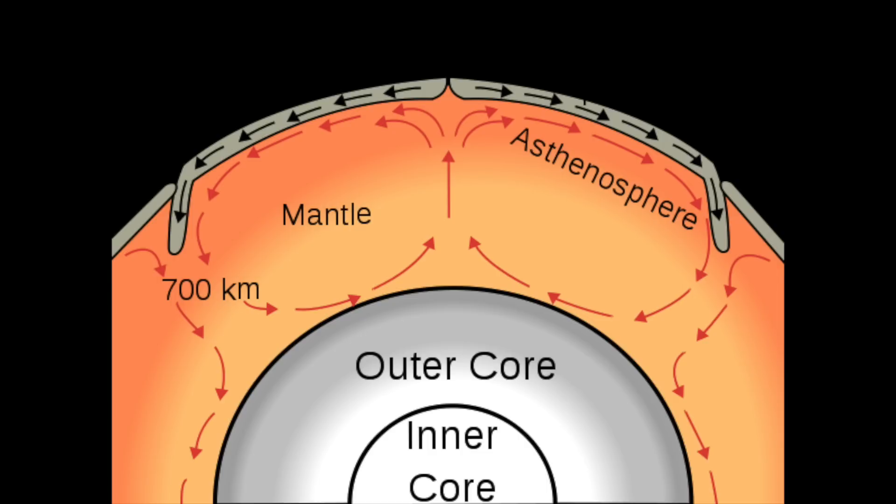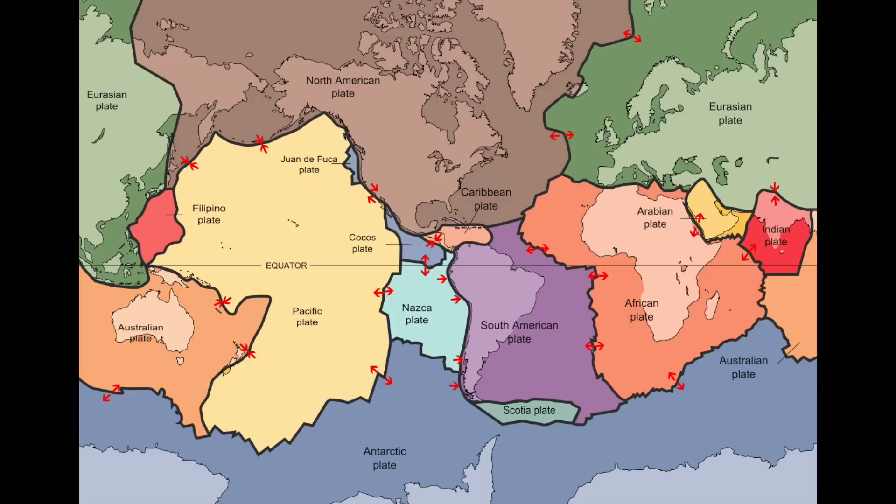Just like soup forms a crust on the top after a while, so did the earth. The convection of the mantle creates cracks in the earth's surface crust, and the cracks form the edges of what we call tectonic plates.